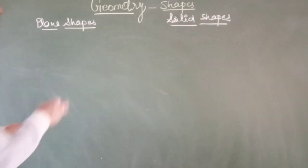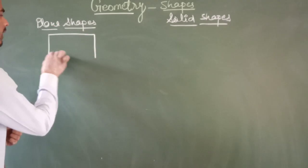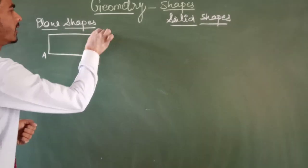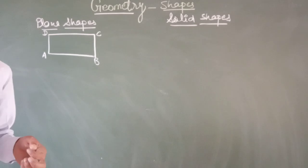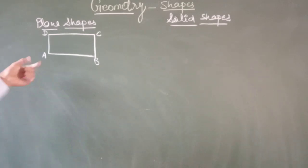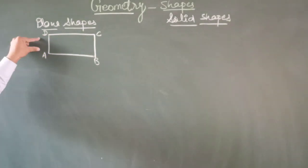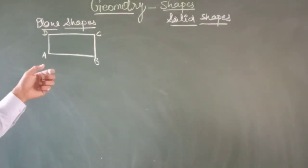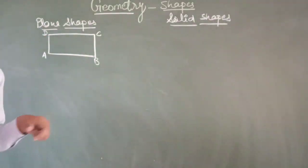Firstly, let's discuss about Rectangle. You can see here, that is a rectangle. A rectangle has four sides: AB, BC, CD, and DA. And it has four corners: A, B, C, and D.